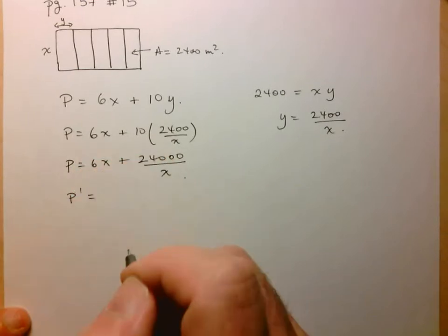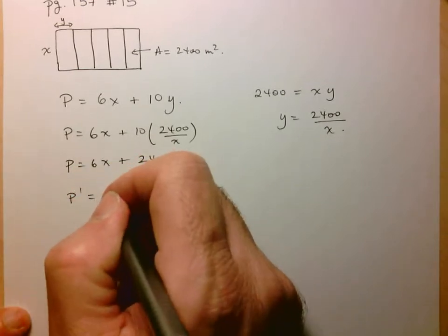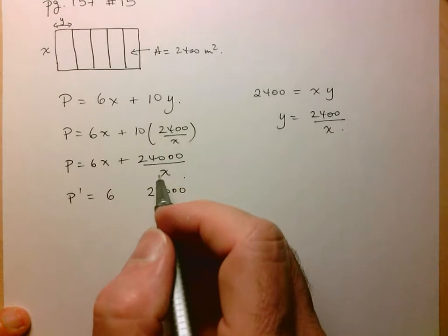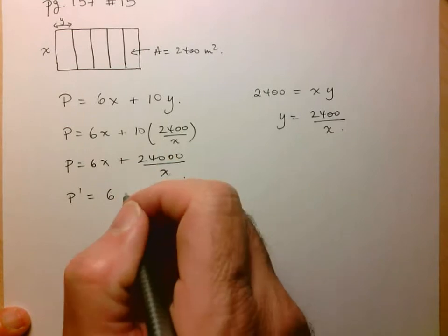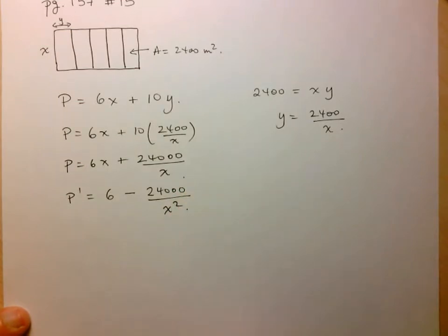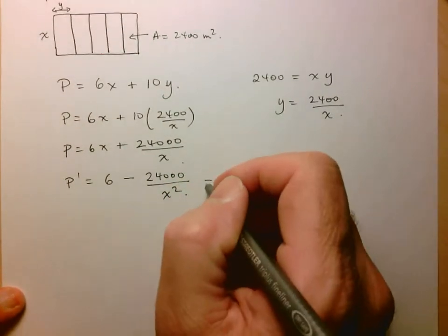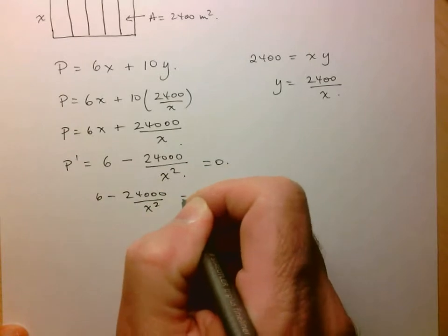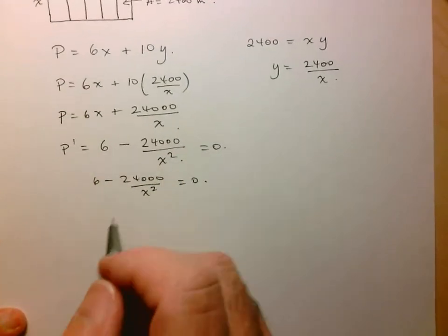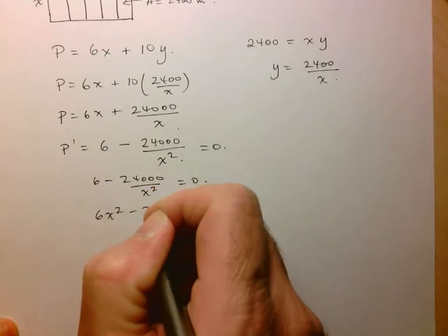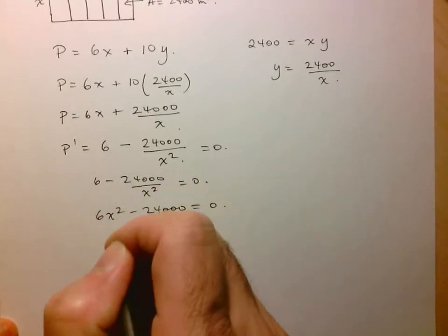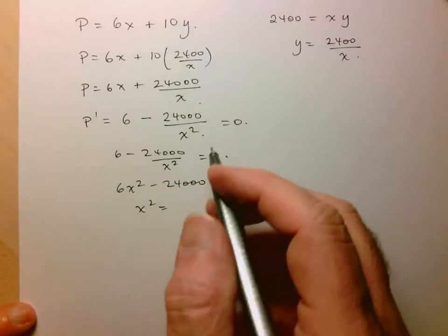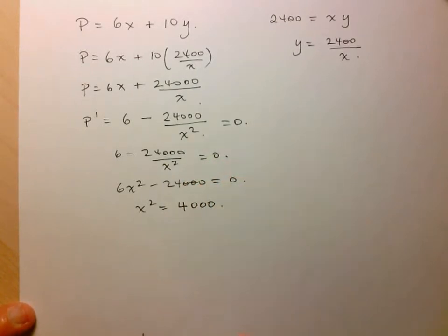I know that the area of any one of these rectangles is 2400, and that's just given by X times Y. So if I'm going to solve for Y, that's just 2400 over X. And now we can input that into my perimeter function. So here, instead of Y, we'll have 2400 over X, so perimeter is 6X plus 24,000 over X. And a fairly easy function to optimize. So let's take the derivative.